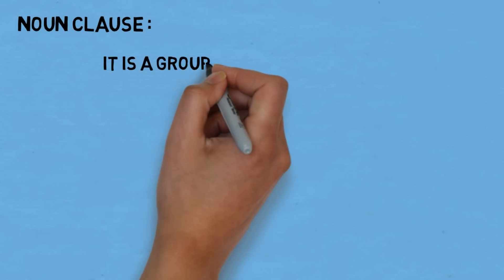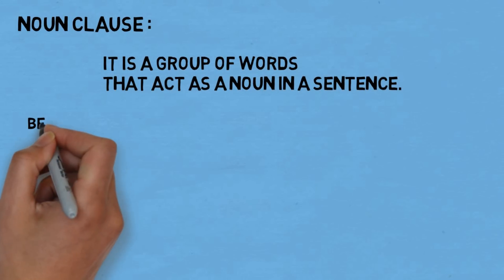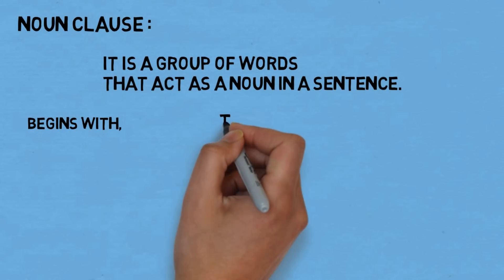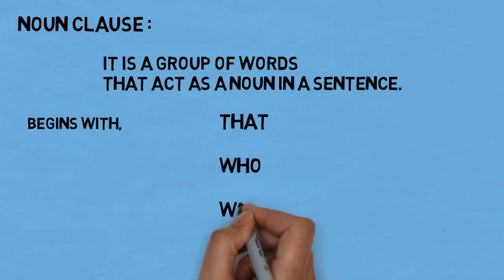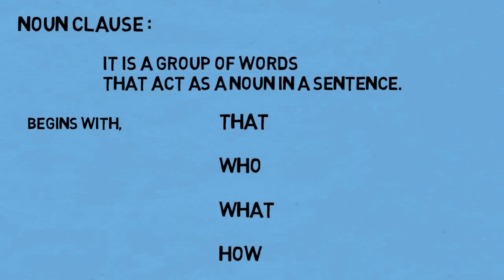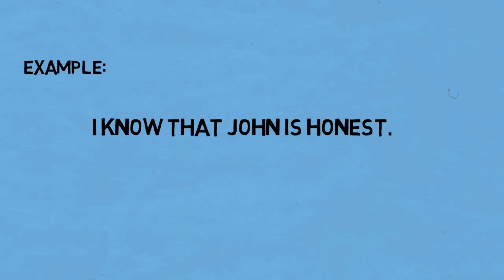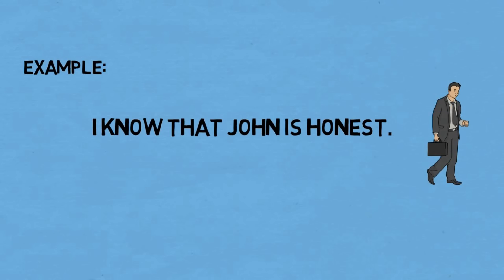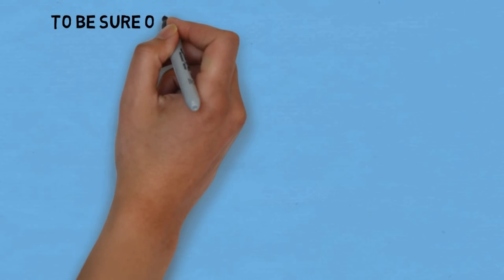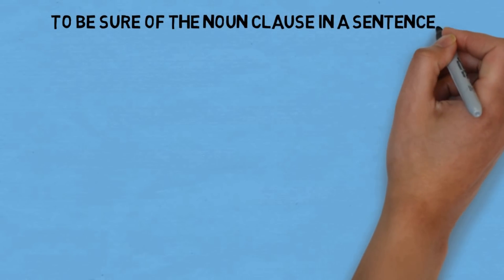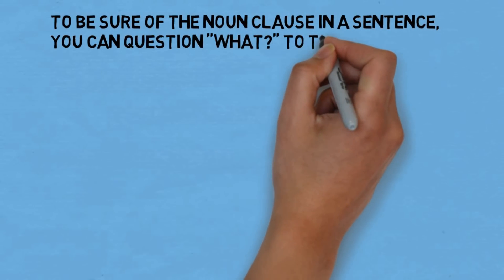A noun clause is a group of words that acts as a noun in a sentence. They begin with linking words like 'that', 'who', 'what', 'how'. For example, 'I know that John is honest' — 'that John is honest' is a noun clause. This clause is the object of the verb 'know' and so does the work of a noun.